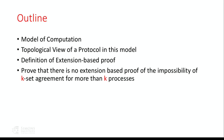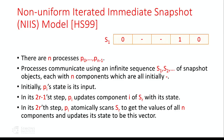The outline of the talk: first, the model of computation — the non-uniform iterated immediate snapshot model, which I'll call NIIS, introduced by Huston and Chavit in 1999. Then a topological view of a protocol in this model. Then I'll formally define what I mean by an extension-based proof, and prove there's no extension-based proof of the impossibility of k-set agreement for more than k processes.